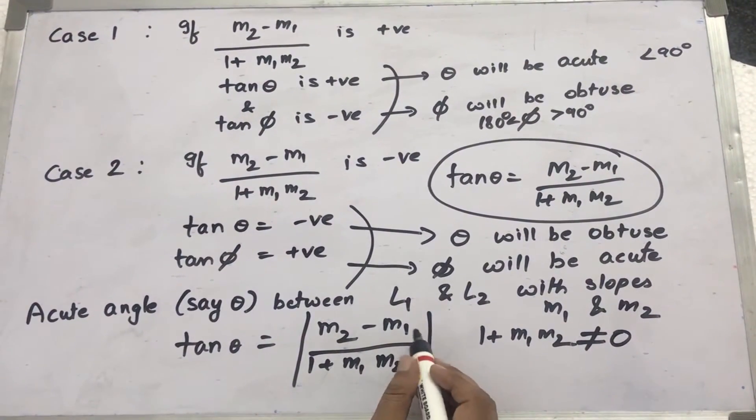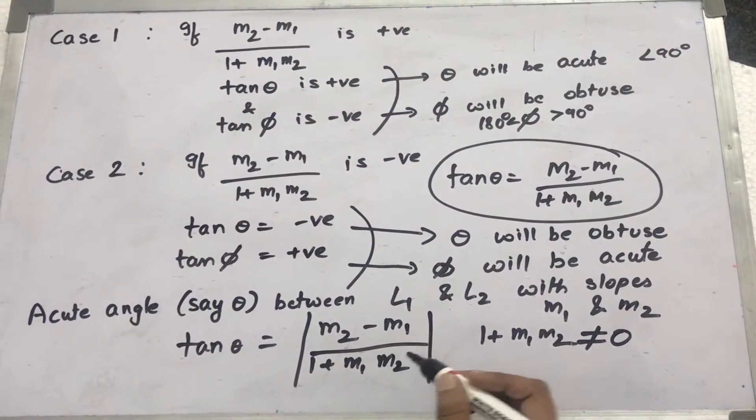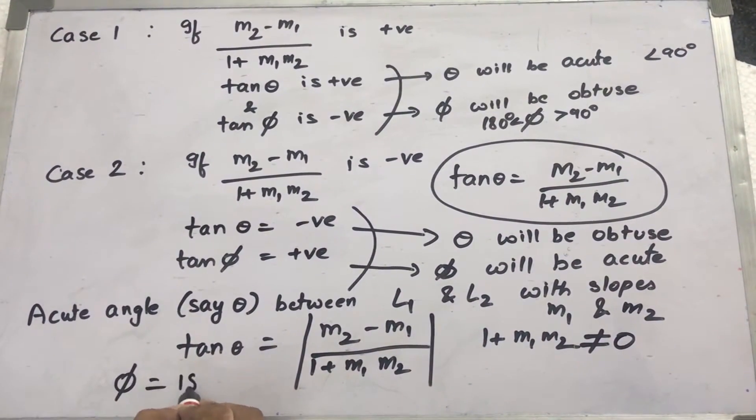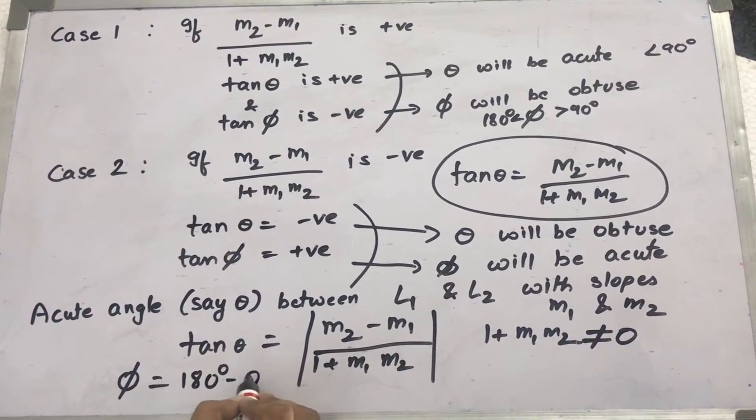If this is equal to 0, then anything divided by 0 will be undefined. The obtuse angle phi will be 180 degrees minus theta.